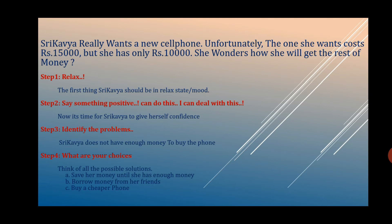In this situation, you have to apply the above seven steps. First: relax — Sri Kavya should be in a relaxed state. Then, think positive — it's time for Sri Kavya to give herself confidence. Then, coming to identify the problems: she does not have enough money to buy the phone.